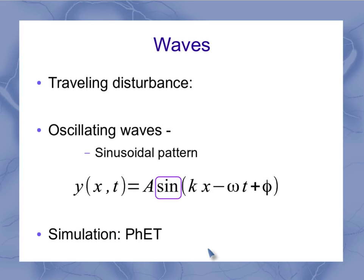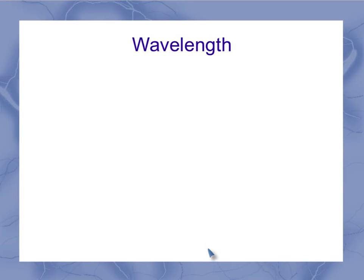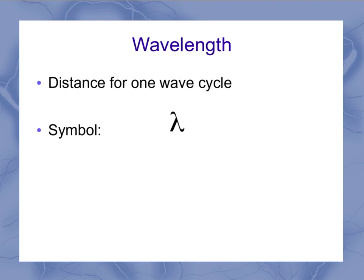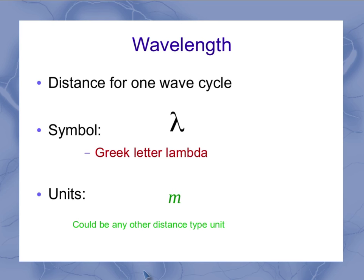So going back to our equations here, we can now define our wavelength. That wavelength is a distance for one wave cycle. And it's got a symbol of lambda. So this is the Greek letter lambda. It looks a little bit like an upside down y, but it's a lowercase Greek lambda. And it's got units of meters. It is, after all, a distance for one wave cycle. And so that means it could have any other distance type unit as well. But our standard metric unit is going to be the meter.